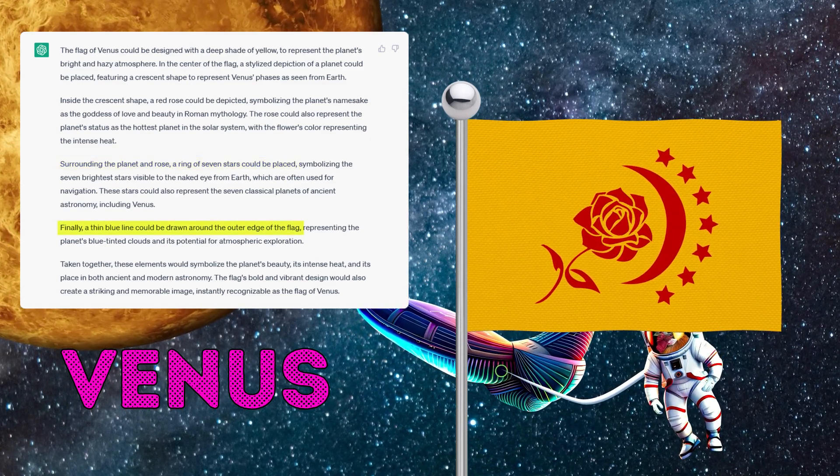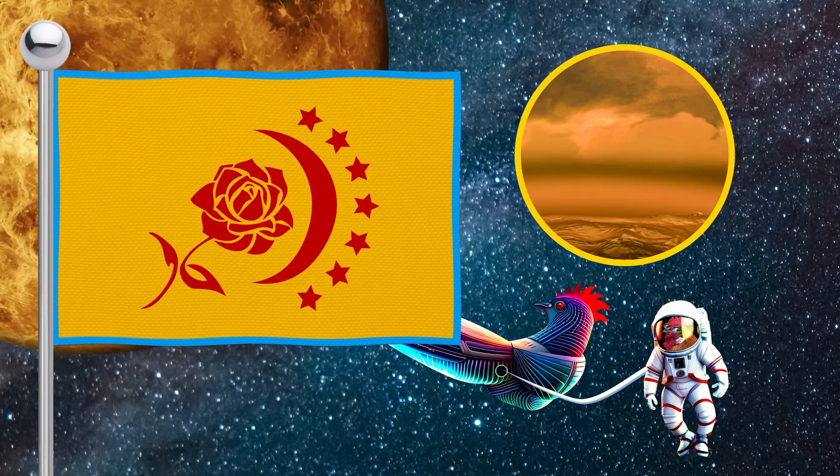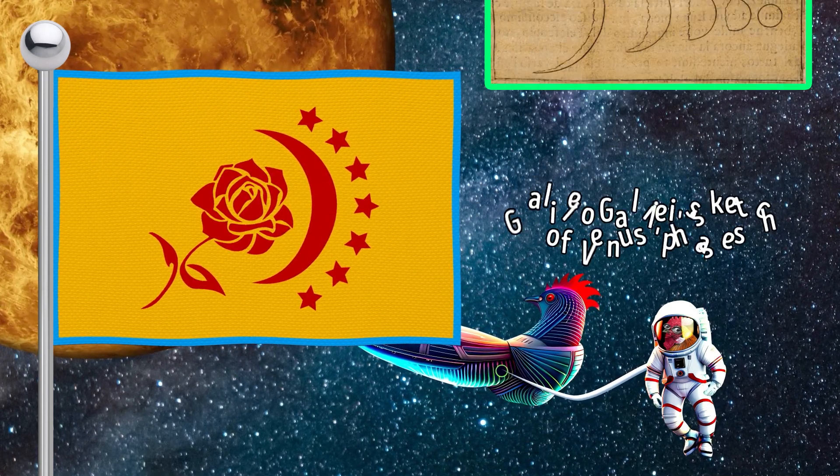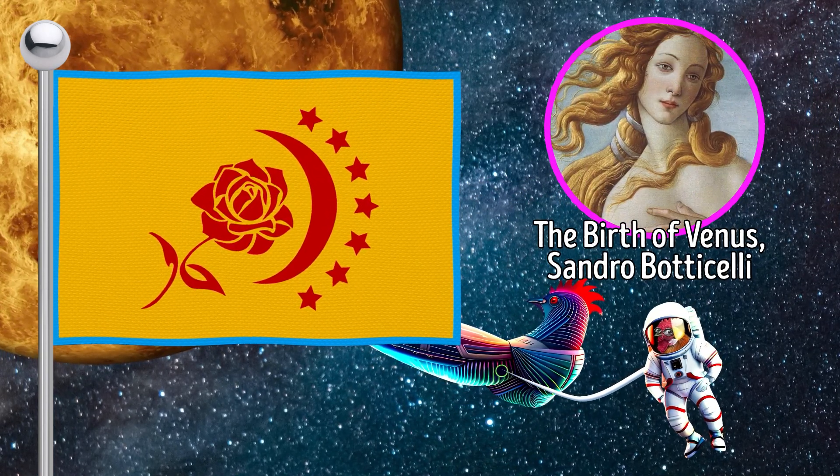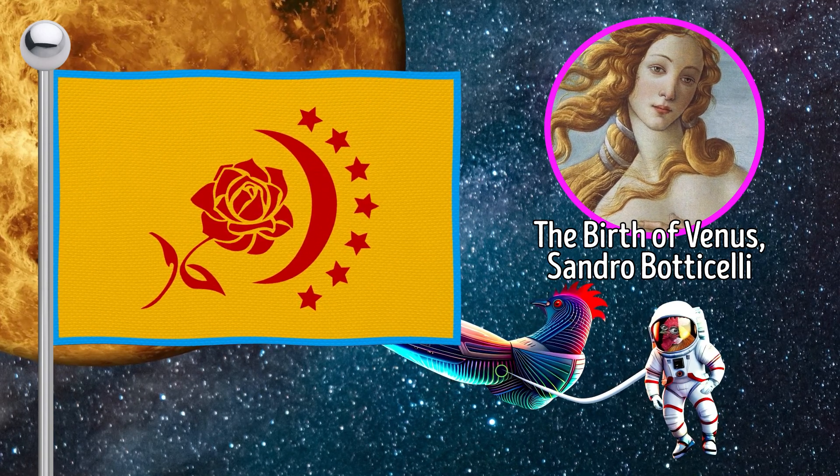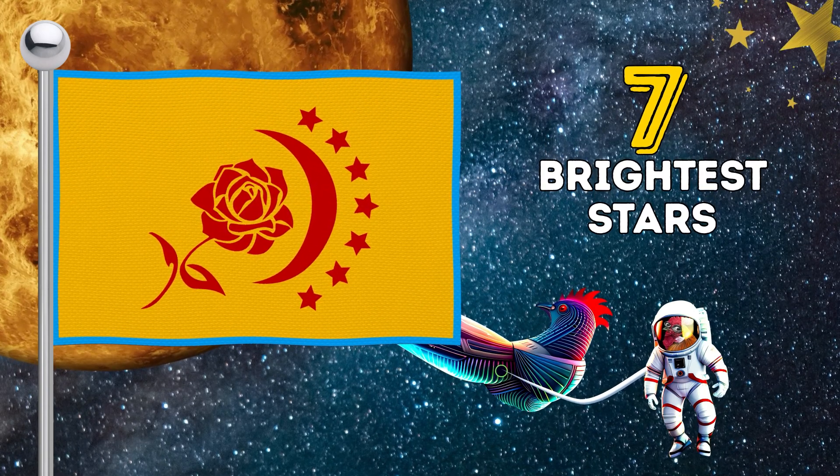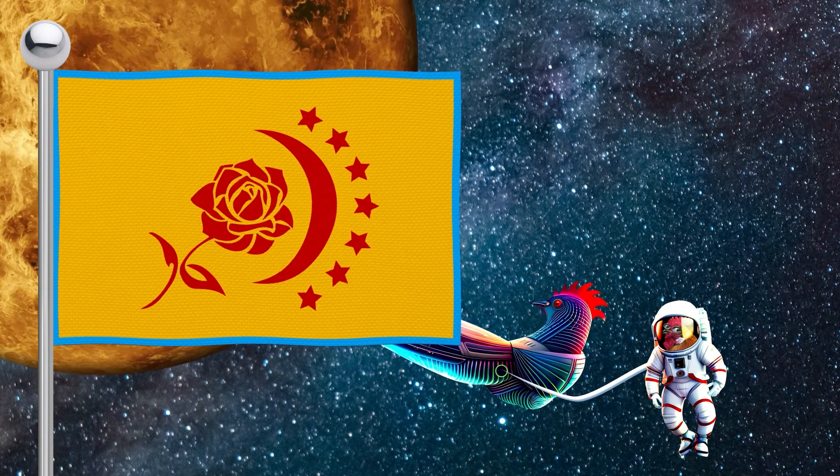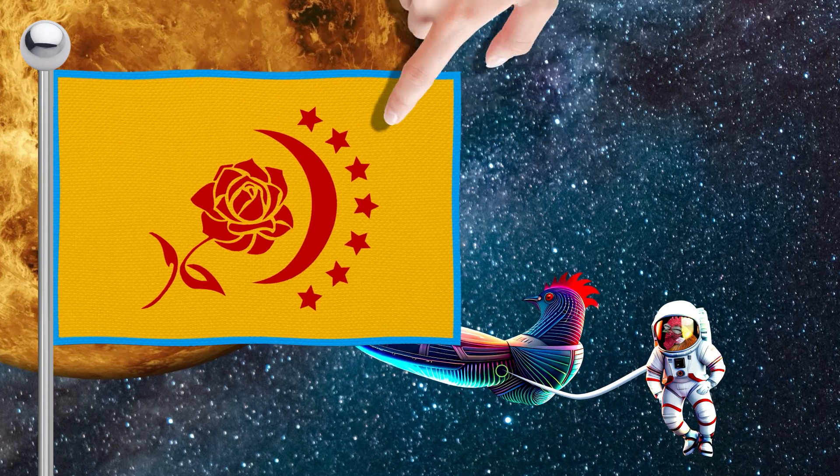The deep yellow color symbolizes the planet's bright and hazy atmosphere. The crescent shape symbolizes Venus phases as seen from Earth. The red rose symbolizes the goddess of love and beauty in Roman mythology. The seven stars symbolize the seven brightest stars visible to the naked eye from Earth, which are often used for navigation. And the blue rim of the flag represents the planet's blue-tinted clouds.